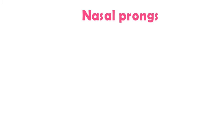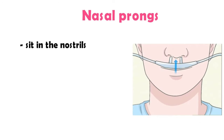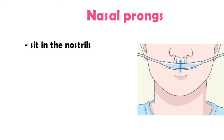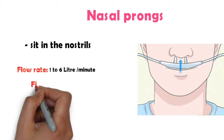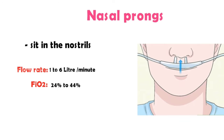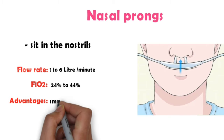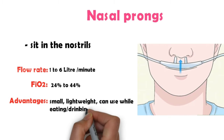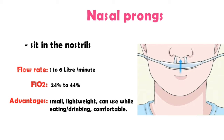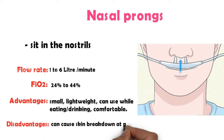Nasal prongs — small prongs that sit in the nostrils. Flow rate: 1–6 liters per minute, so it's a low flow system. FiO2: 24–44%. Advantages: small, lightweight, can be used while eating or drinking, and comfortable. Disadvantages: can cause skin breakdown at the nostrils and ears, and can be drying — add humidification to prevent this.